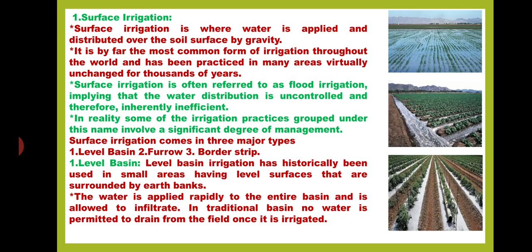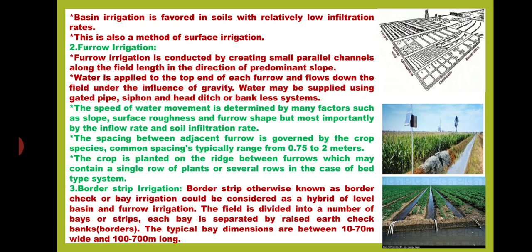First we discuss about level basin. Level basin irrigation has historically been used in small areas having level surfaces that are surrounded by earth banks. The water is applied rapidly to the entire basin and is allowed to infiltrate. In traditional basin, no water is permitted to drain from the field once it is irrigated. Basin irrigation is favored in soils with relatively low infiltration rates.